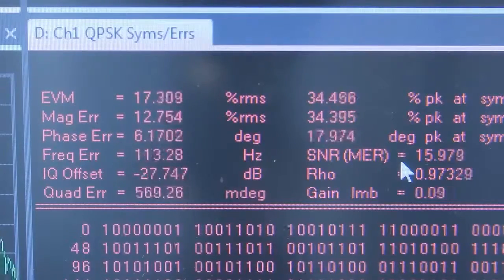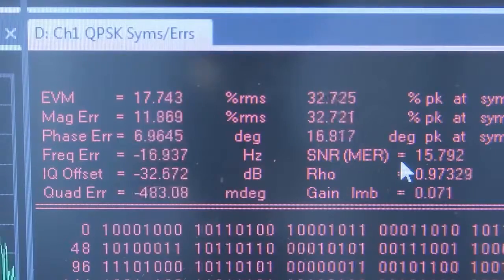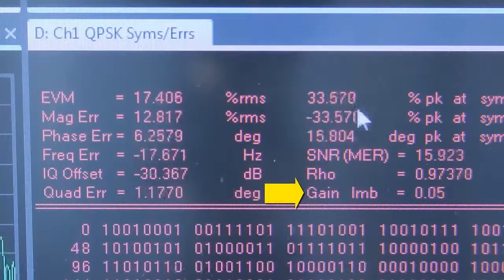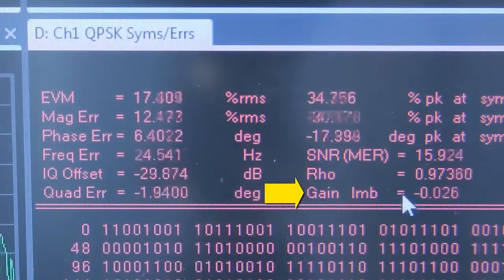Now let's add some distortions to the signal. Please observe the gain imbalance value while I am changing the amplitude on channel 1.